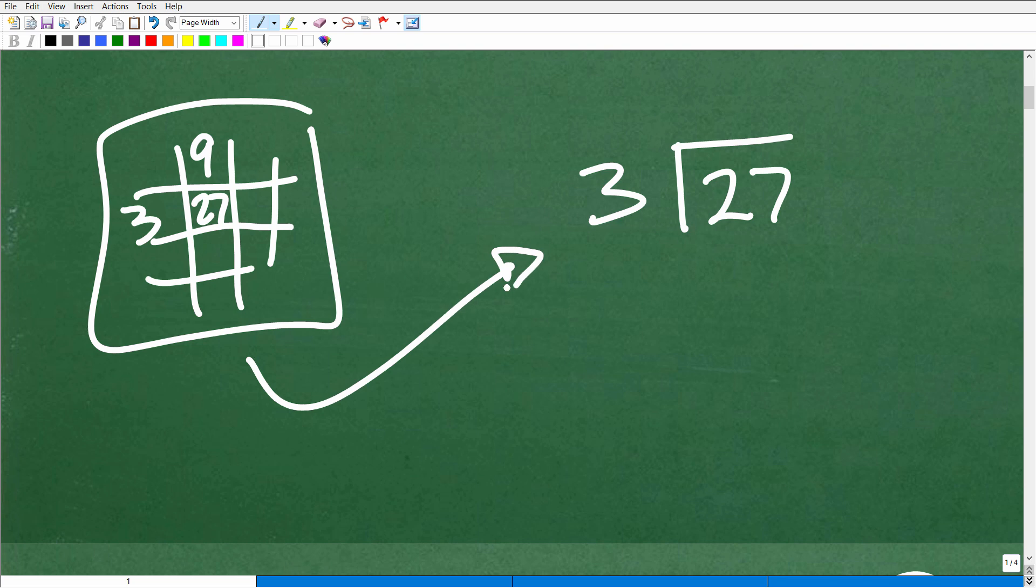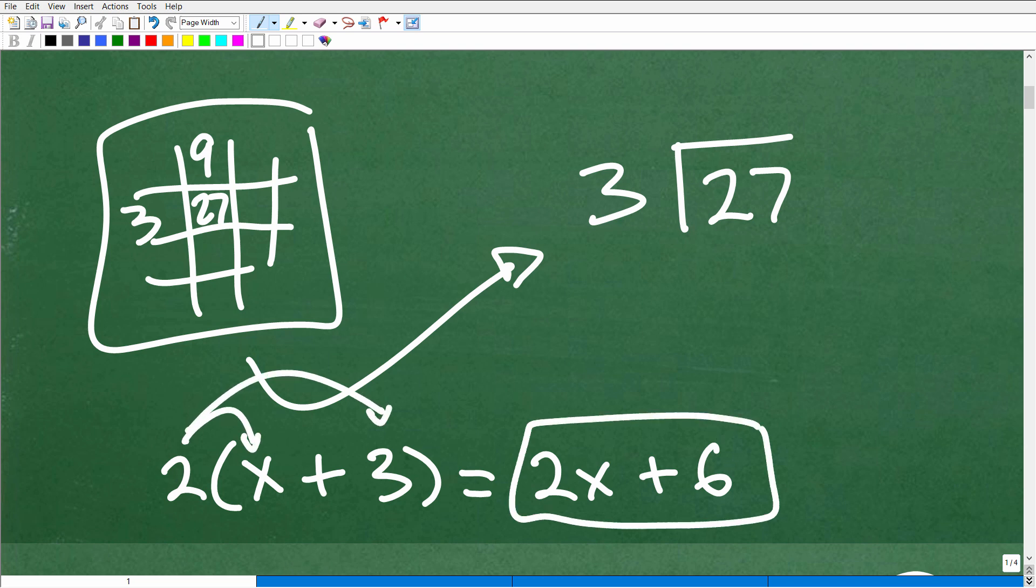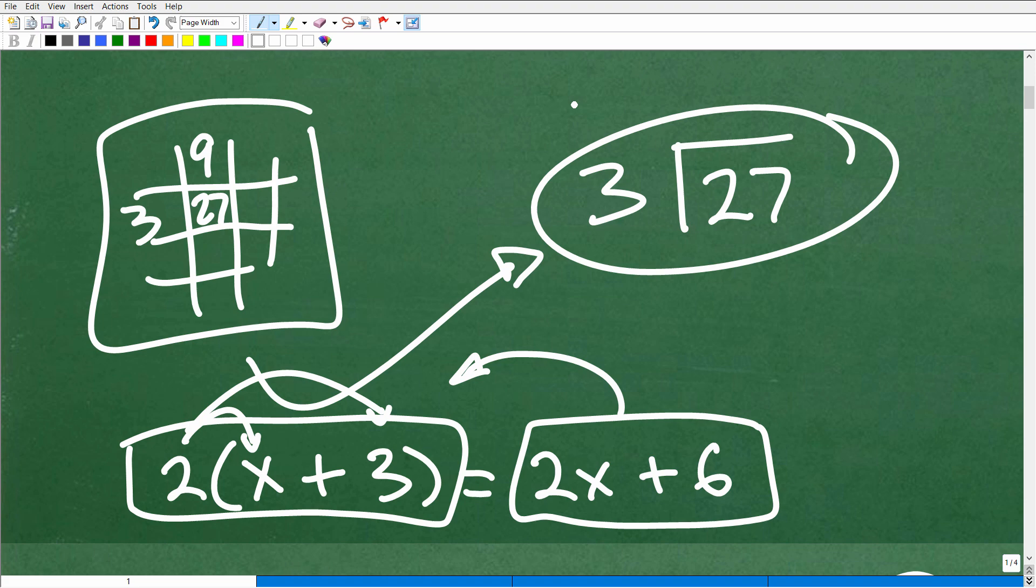Same thing in algebra. You need to understand how to multiply before you factor. So here, if I had 2 times x plus 3, what is that equal to? Well that's equal to 2x plus 6. This is an application of the distributive property. Now if I wanted to factor this, I'm thinking, oh okay, this was the result of 2 times x plus 3. So going in this direction is factoring. So you can't learn how to factor until you have mastered multiplication. Same thing with arithmetic. You can't do division until you get multiplication down.